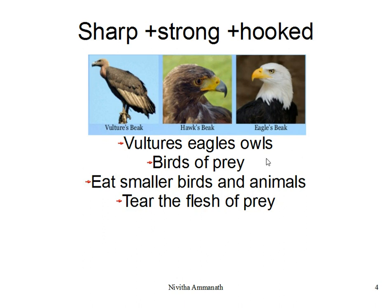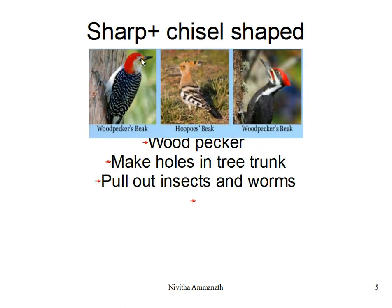Chisel-shaped beaks are found in woodpeckers. These beaks are helpful to make holes in the tree trunk. They also help to pull out insects and worms. An example is the woodpecker or hoopoe. Sharp and chisel-shaped beaks help to make holes in the tree trunk and pull out insects and worms.